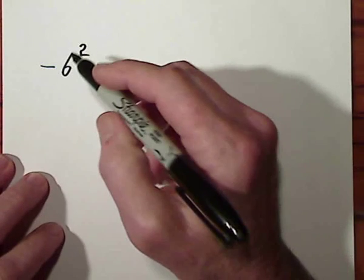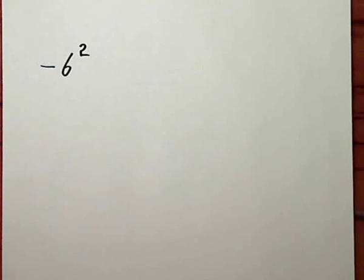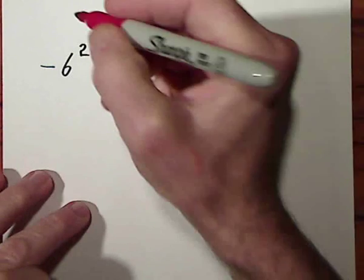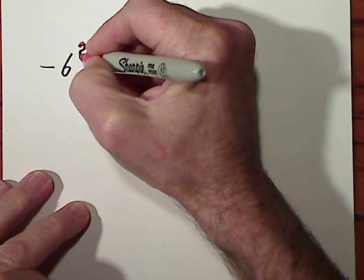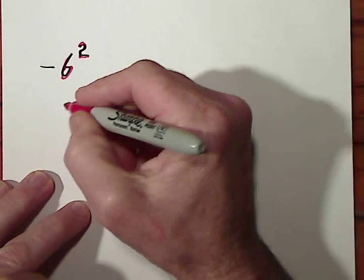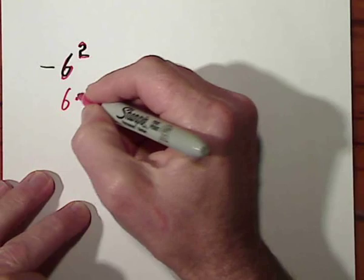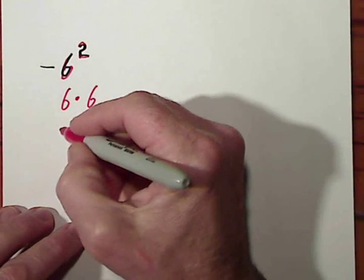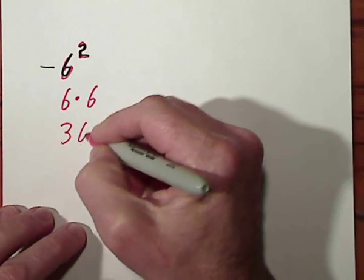So in this case, the 2 is touching the 6. Let's emphasize that. The 2 is touching the 6, so that means you have 6 times 6, which yields 36.